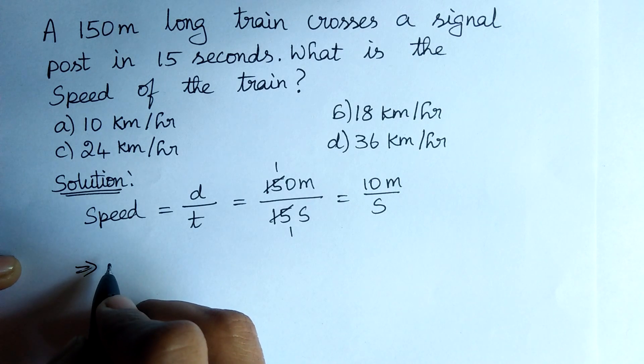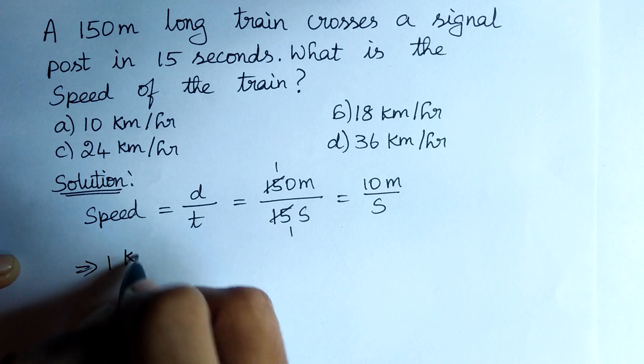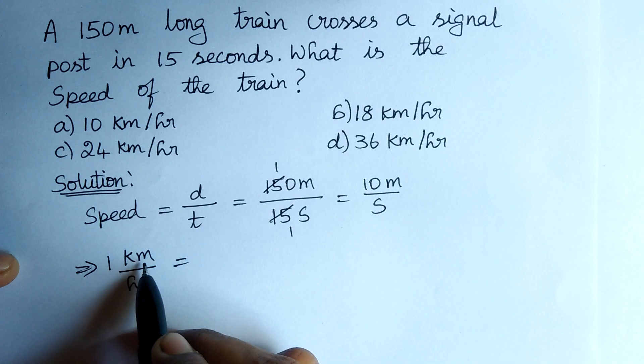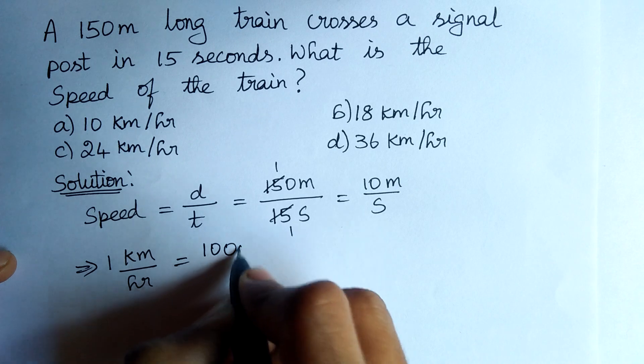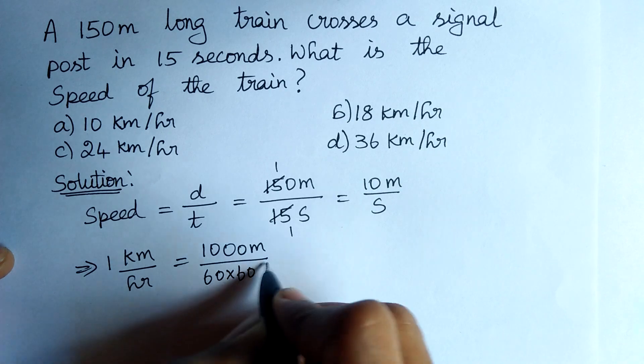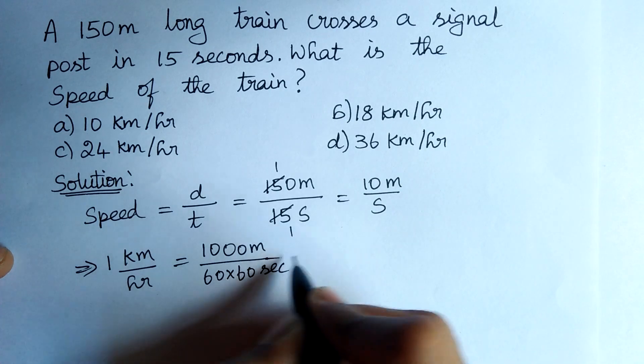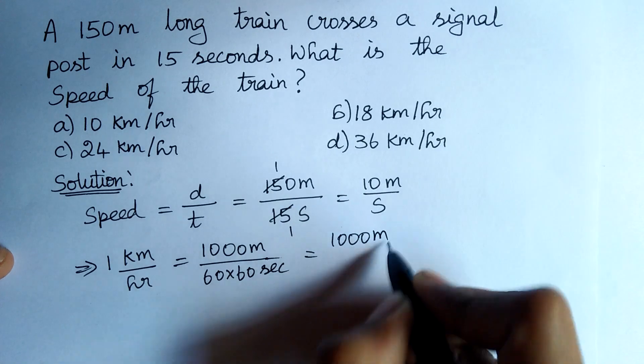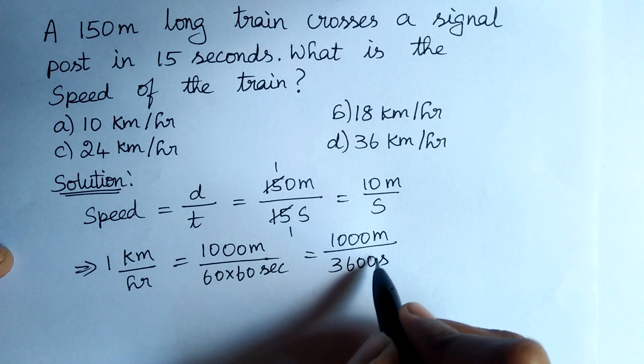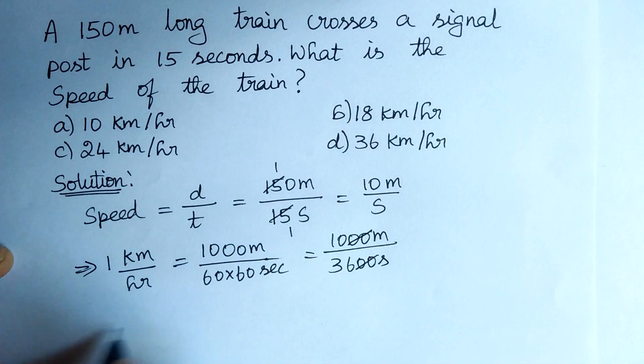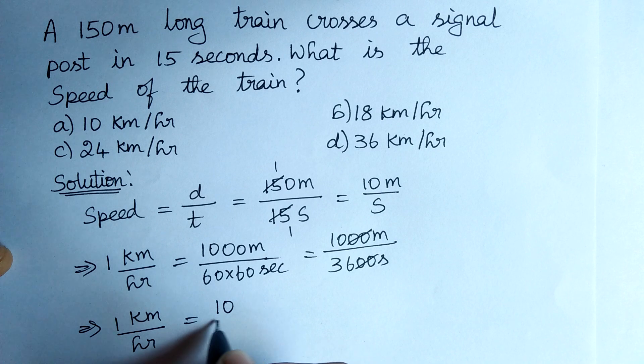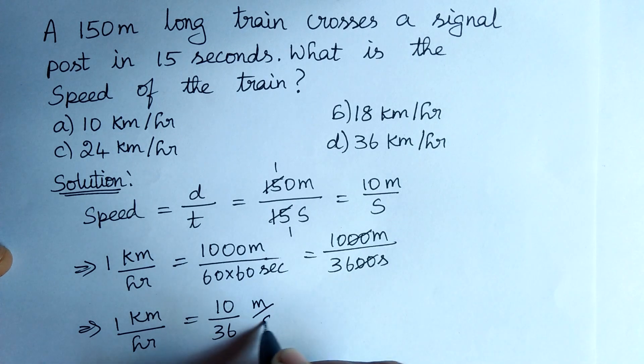Now, to convert into kilometer per hour, let us assume 1 km per hour is equal to... 1 km is equal to 1000 meters divided by 1 hour is equal to 60 into 60 seconds. We get 3,600 seconds. Simplifying it, we get 10 by 36 meters per second.